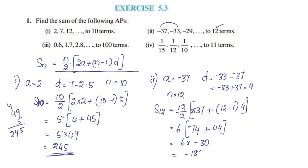6 into negative 30 equals negative 180. So S12 for the AP of 12 terms is negative 180.